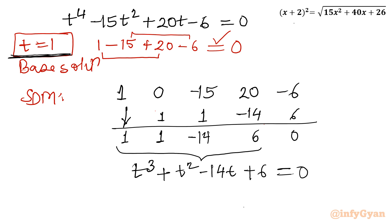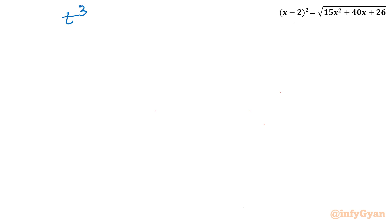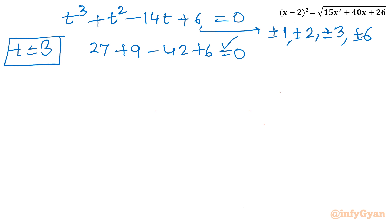Now again I will use synthetic division and rational root theorem this time. So let me write this cubic equation once. t³ + t² - 14t + 6 = 0. If I will use rational root theorem, then the factors are plus minus 1, plus minus 2, plus minus 3, and plus minus 6. So let me put straight away t = 3. If I will put, see what will come out. 27 + 9 - 42 + 6. Is it 0? 27 plus 9, 36. Plus 6, 42. Yes. It is making our RHS 0. That means t = 3 is our base solution for this cubic equation.